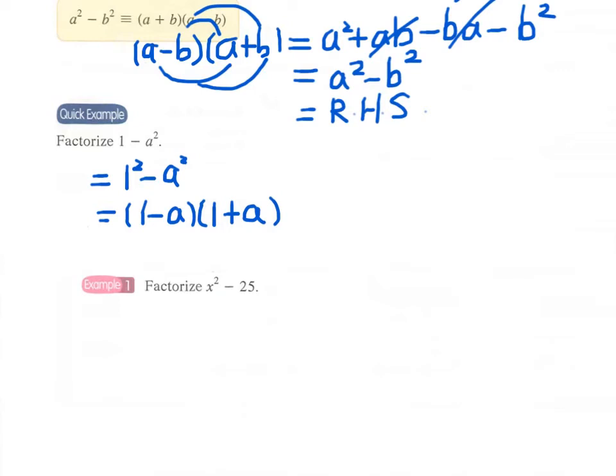Example 1: We have to factorize x squared minus 25. Again, 25 we can write as the square of 5, and therefore we have x minus 5 times x plus 5. Easy.